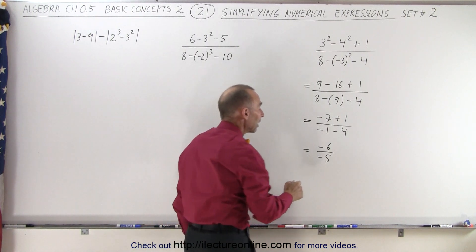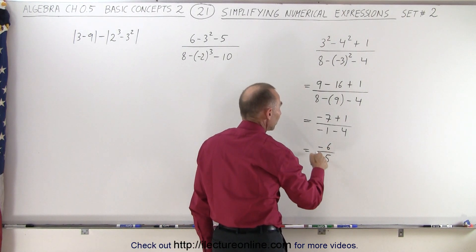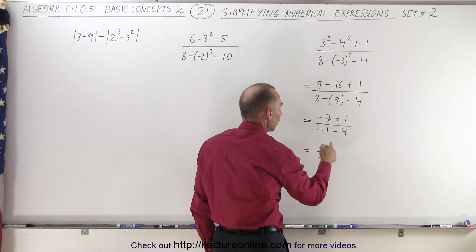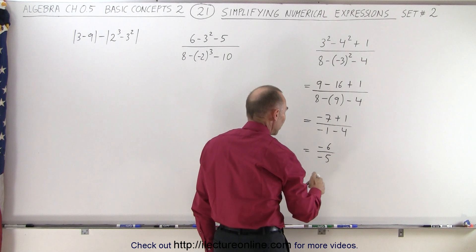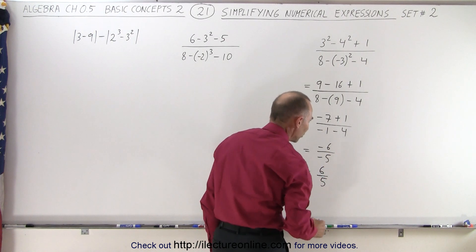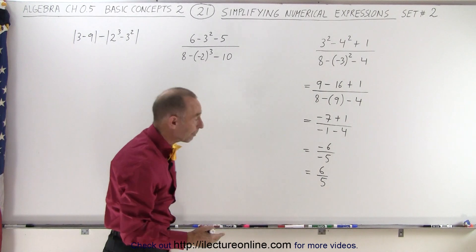Now we can see that we can get rid of the negative signs. We have a negative in the numerator, negative in the denominator. So we can multiply both the top and the bottom by negative 1 and write this as a positive 6 over a positive 5. When we divide a negative by a negative, we get a positive.